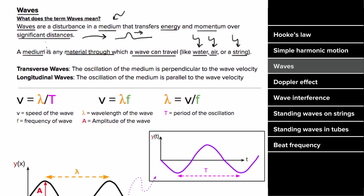For transverse waves, the disturbance of the medium is perpendicular to the wave velocity — the direction in which the disturbance travels. The oscillation of the medium is the direction in which particles actually move. For a wave on a string, the particles move up and down but the disturbance travels to the right, so this is a transverse wave.